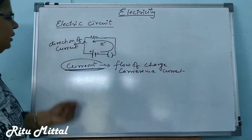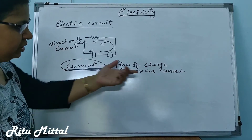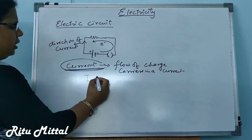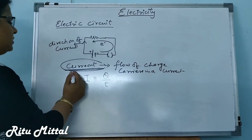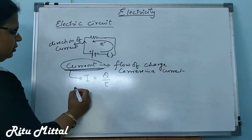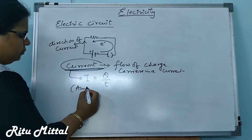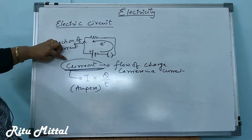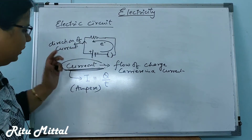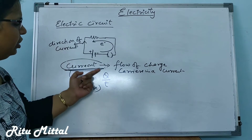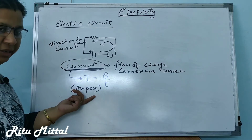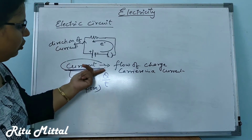The current in a circuit depends on how much charge carriers flow. The formula for this is I = q / t. I is the symbol for current. Its unit is amperes. Current is present in a circuit because of the flow of charge carriers, and I is defined as q divided by t.